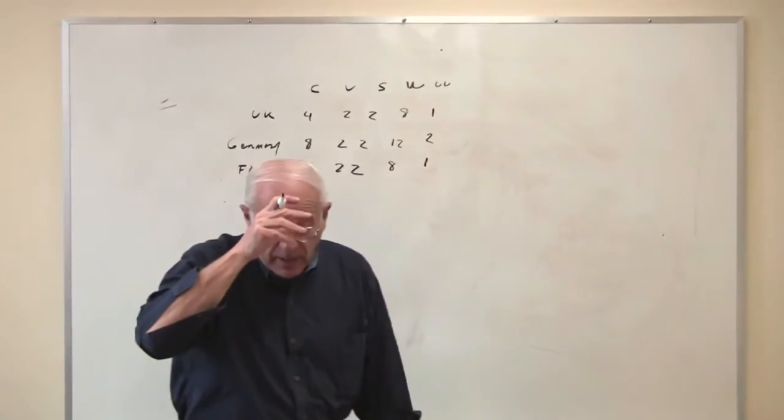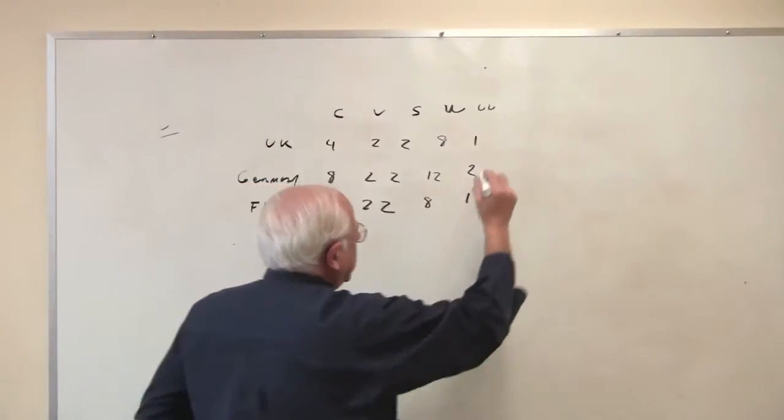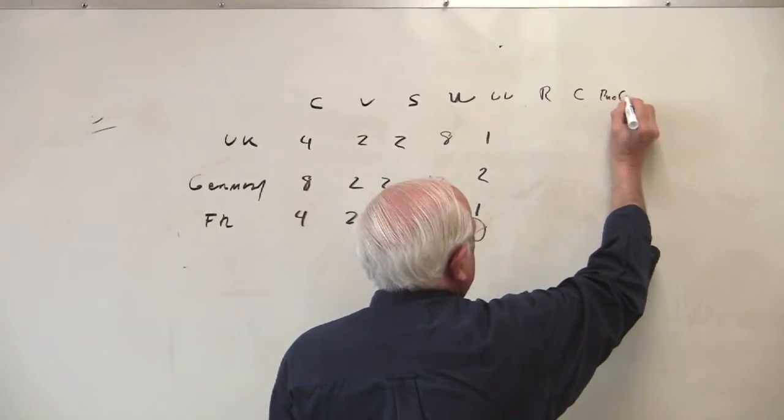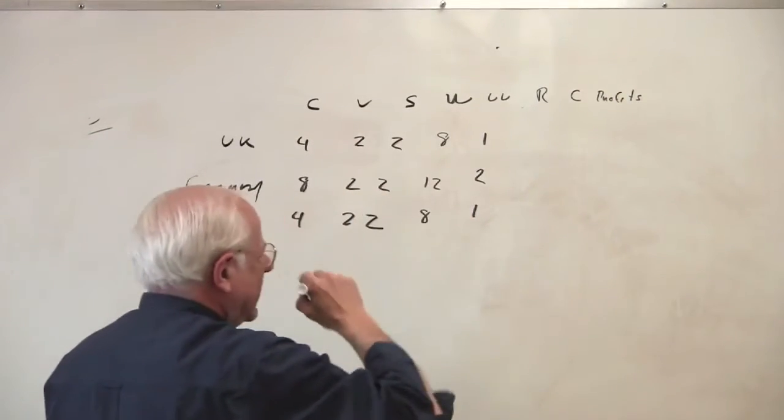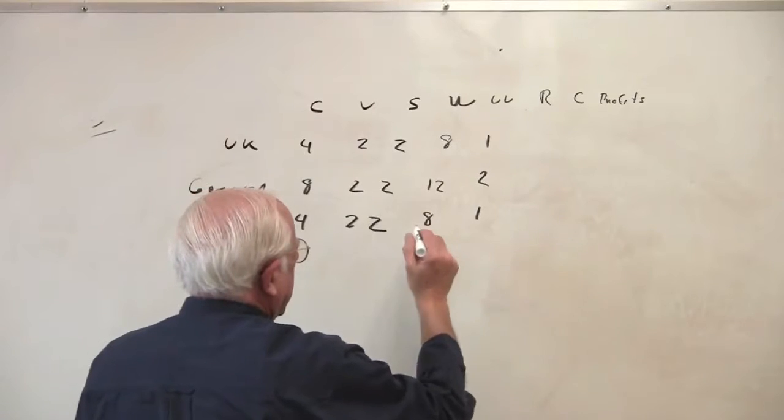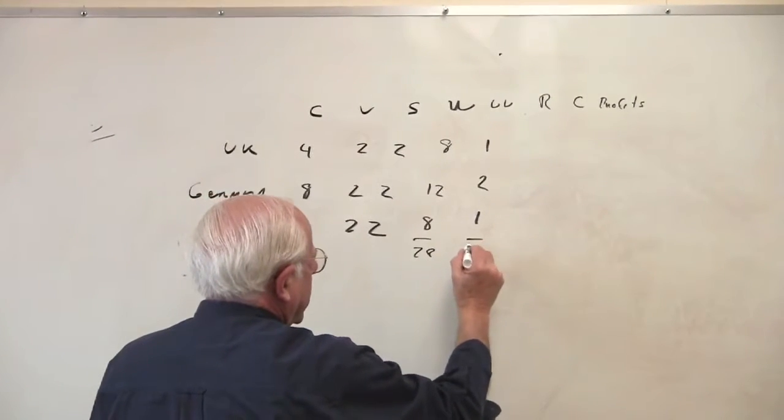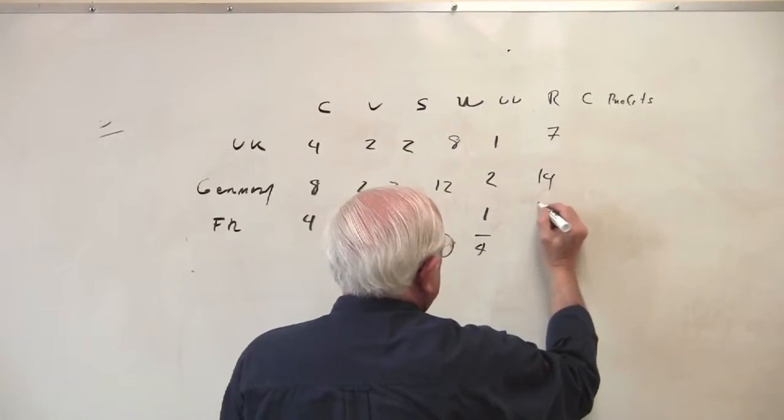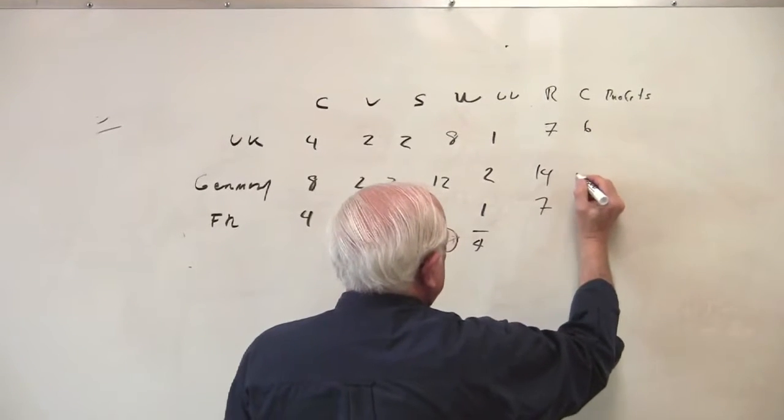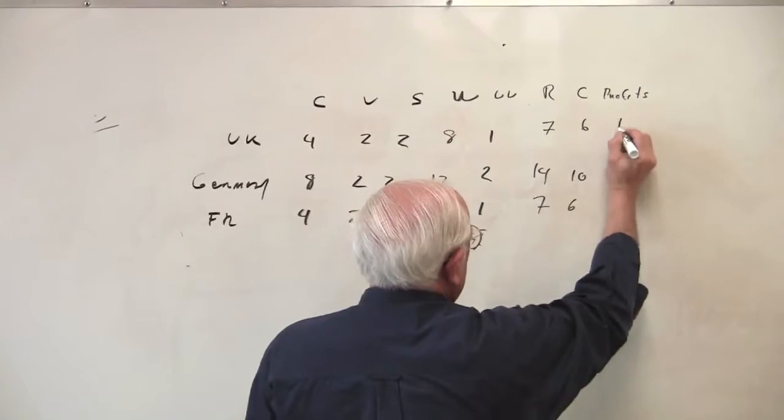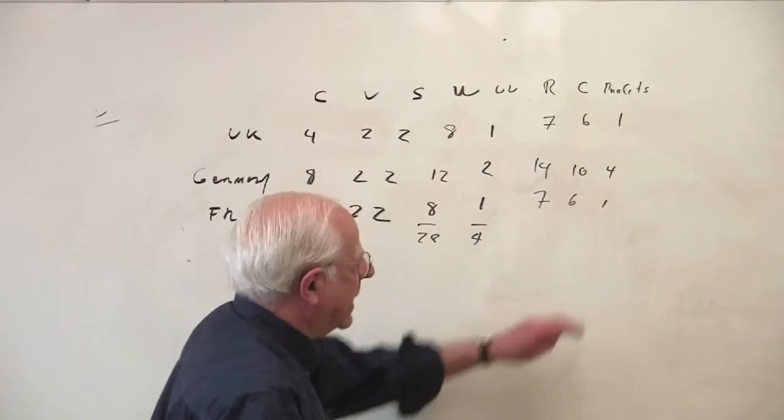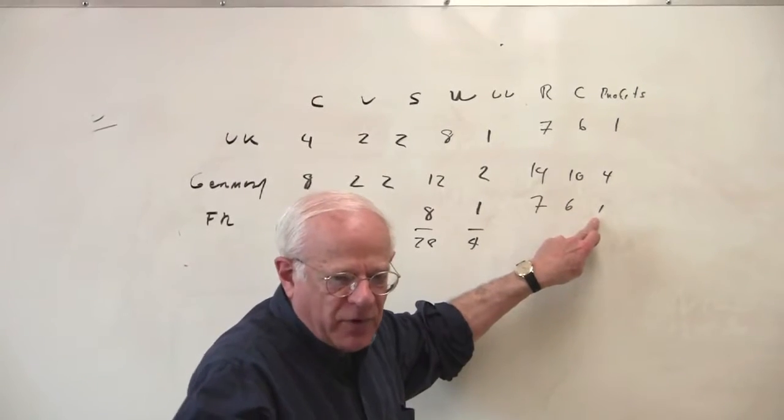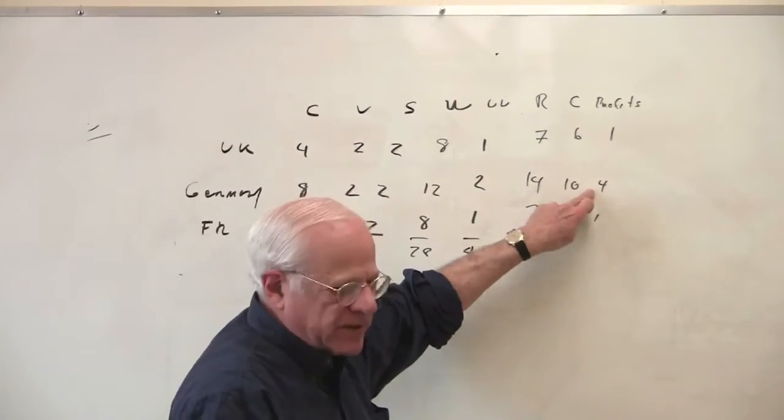All right. And let me put in, because it's useful to me, the revenues, the costs, and the profits. Okay. The new price was, it was 28, 4. That was then 7, 14, 7, 6, 10, 6, 1, 4, 1. And you know, that's the problem. This new vector of profits is the problem for the British and the French and the success of the Germans.